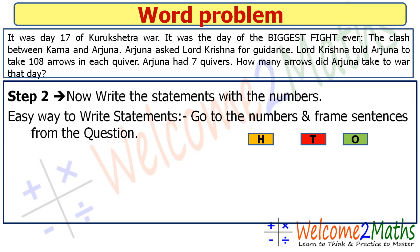Step two: write the statements with the numbers. The easy way to write statements is to go to the numbers and frame sentences from the question. We learned this in our previous lecture on addition and subtraction word problems. Always take the larger number first. Here, 108 is the larger number, so we take 108 first. What is 108? It is the number of arrows in each quiver. So the statement is: number of arrows in each quiver.